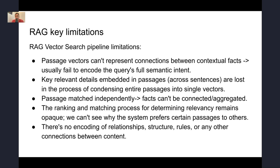The last challenge is that there is no encoding of relationships, structures, rules, or any other connections between content. We simply pass text into the embedding model and it gives us a vector. We are not explicitly encoding any relationship. For example, if I say 'Washington, D.C. is the capital of the United States,' we just pass the sentence into the embedding. We don't explicitly say that 'capital of' is the relationship between Washington, D.C. and the United States, or that Washington, D.C. is of the type 'city.' Those kinds of explicit relationships are absent when we vectorize text.